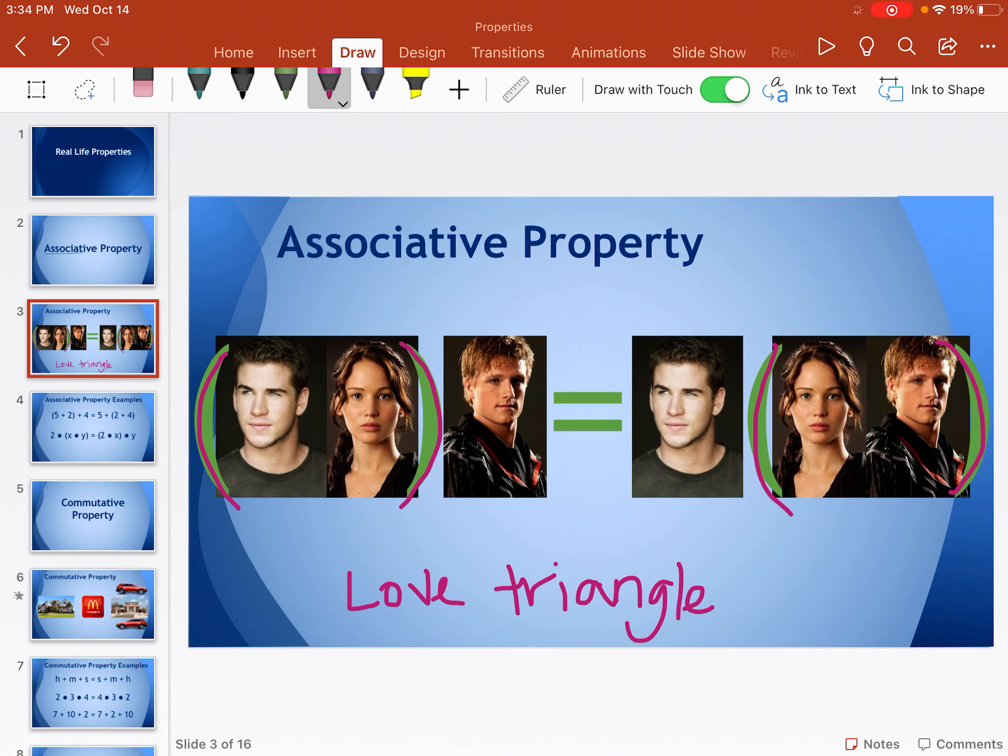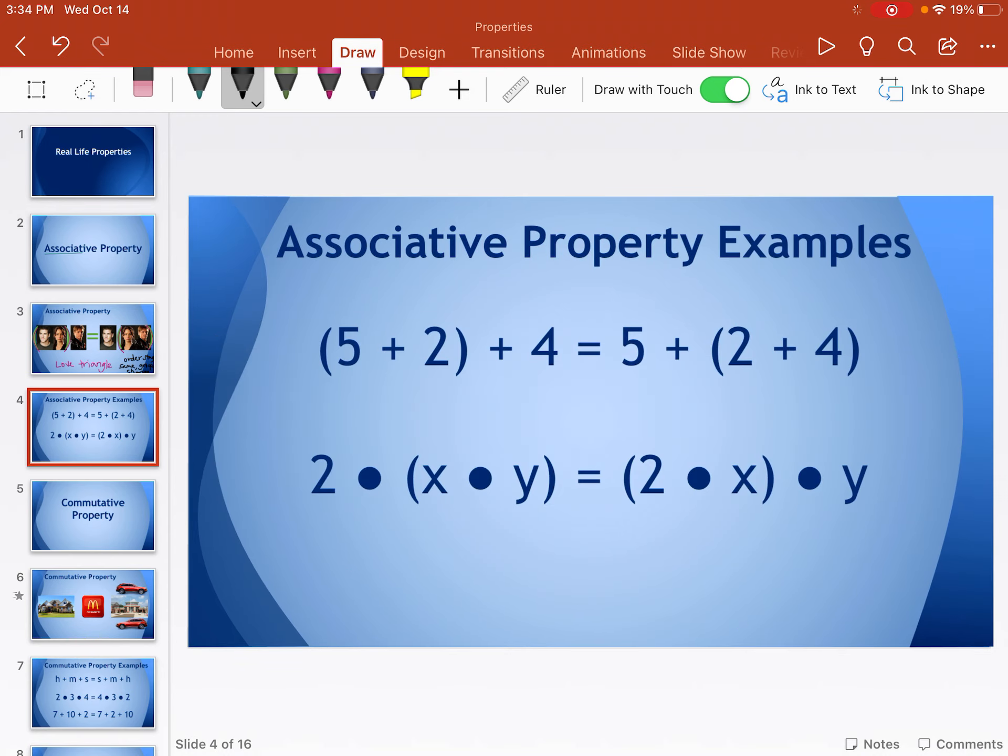So I would write down that it's the love triangle one. I would also maybe mention in my ways to remember that this is about the group, like the order stays the same, the groups change, or the parentheses change. So that's obviously a little bit silly with the Gail, Katniss, and Peta. So what it really looks like is like this. These are some of your examples you're going to write down. So it says examples of addition, examples of multiplication. So for an addition example, this first one. So 5 plus 2 plus 4. Notice in the first one, the 5 and the 2 were being grouped together. They are in love, and the 4 is left out. And on the other side of the equal sign, the 2 and the 4 are in love. They're grouped together, and the 5 is left out. So remember, again, it's all about the groupings. The order stayed the same. 5, 2, 4, 5, 2, 4. The only thing that changed is where those parentheses were.